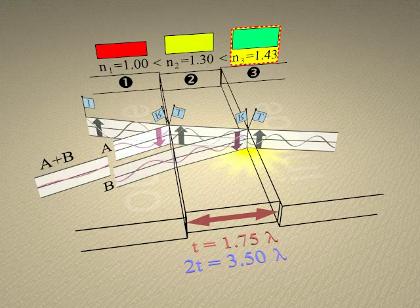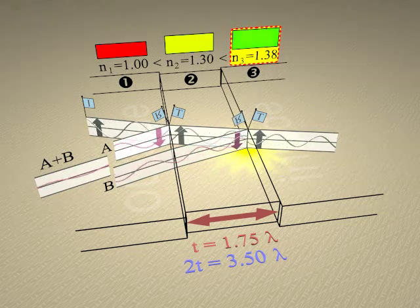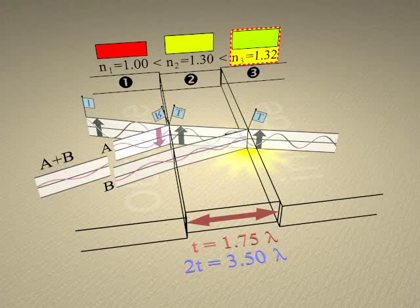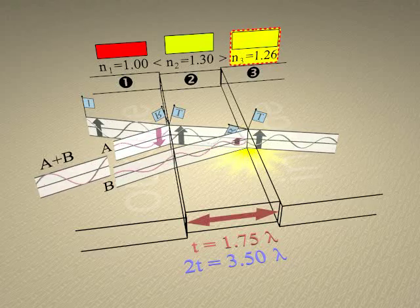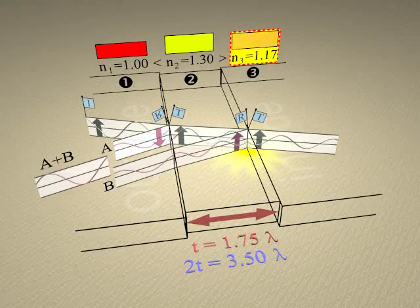Additionally, lowering the index of the third medium will cause the second reflection to be emitted right side up and effectively shifted in phase by 180 degrees.